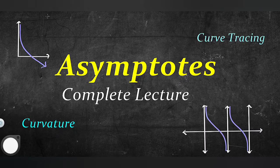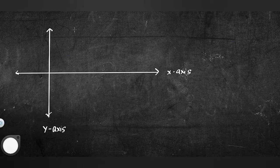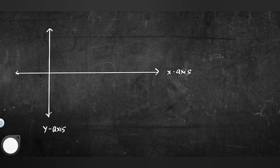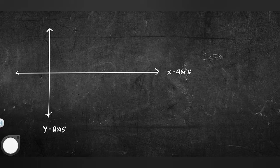Asymptote کیا ہوتا ہے؟ Asymptote وہ straight line ہوتی ہے جو کسی curve کے ساتھ ساتھ چلتی ہے۔ Simple meaning یہ ہے کہ جیسے آپ کسی road پر car drive کر رہے ہیں تو آپ کو لگتا ہے کہ road اور sky آپس میں کبھی نہ کبھی مل رہے ہیں — ایک line دکھتی ہے۔ لیکن ایسا ہوتا نہیں — وہ جو لگنا ہے وہی asymptote ہے۔